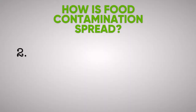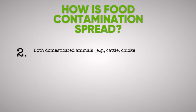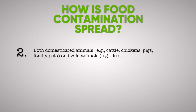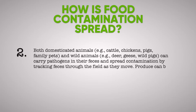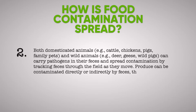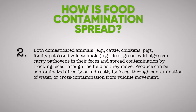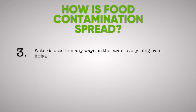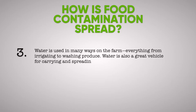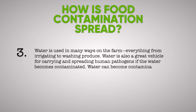2. Both domestic animals and wild animals can carry pathogens in their feces and spread contamination by tracking feces through the fields as they move. Produce can be contaminated directly or indirectly by feces through contamination of water or cross-contamination from wildlife movement. 3. Water is used in many ways on the farm, everything from irrigating to washing produce. Water is also a great vehicle for carrying and spreading human pathogens if the water becomes contaminated. Water can become contaminated at the source as well as at any point in its distribution and use.